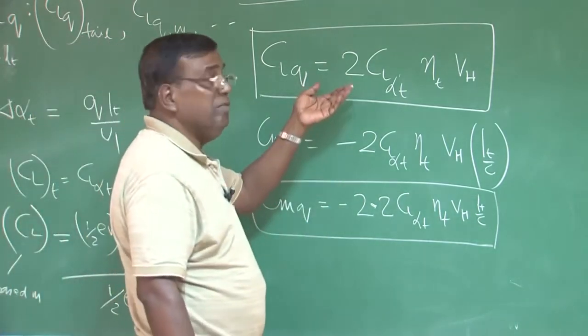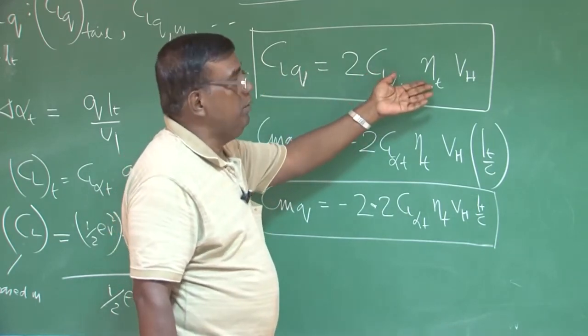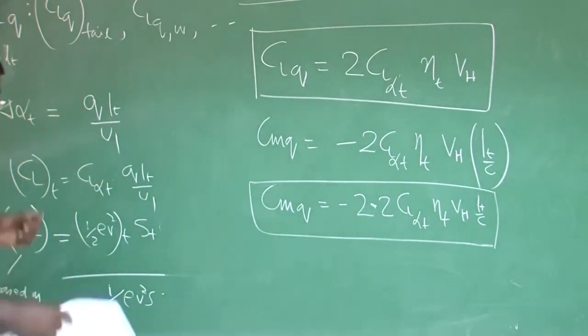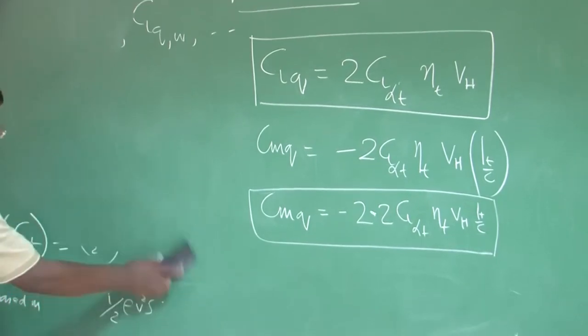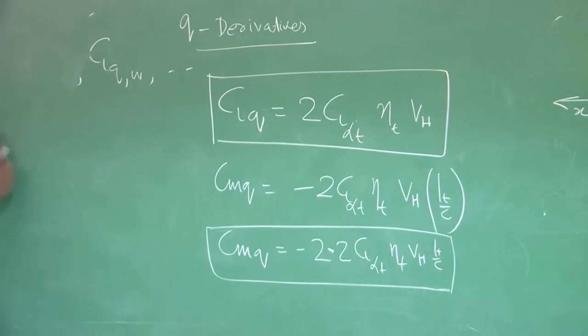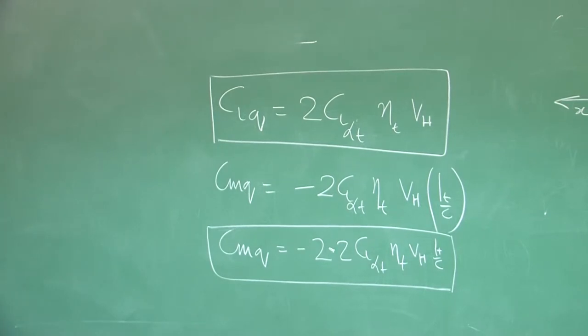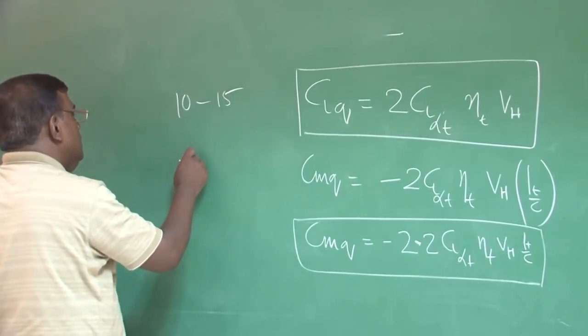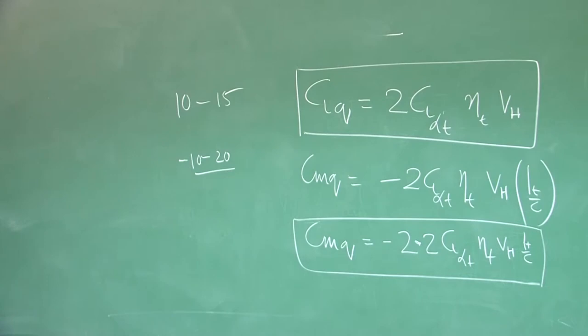So, we know the expression of CLq and CMq, we derive this expression just to convince you that, although they will look very nasty, but very simple to estimate. I know CL alpha tail, I know ratio of the dynamic pressure may be 0.9, 0.95. I know tail volume ratio, what is the problem? I can find out this derivative, right. As a designer, you always associate all these derivatives through numbers. Unless you develop that field, you are not ready for designing an aircraft. Typical value of CLq, you will find it will be between 10 to 15 and CMq also could be minus 10 to minus 20 around these typical values for CLq and CMq.